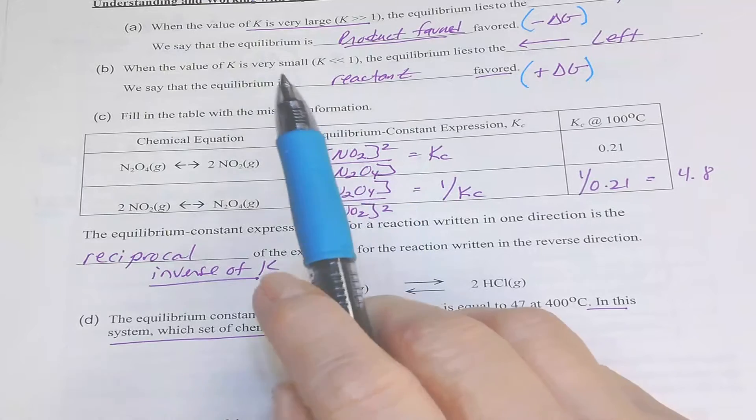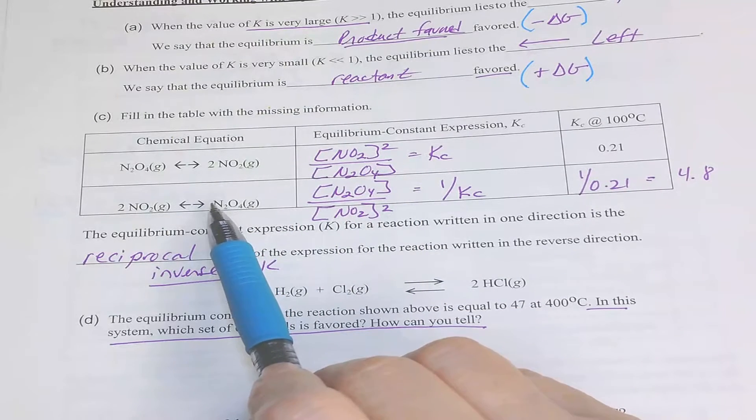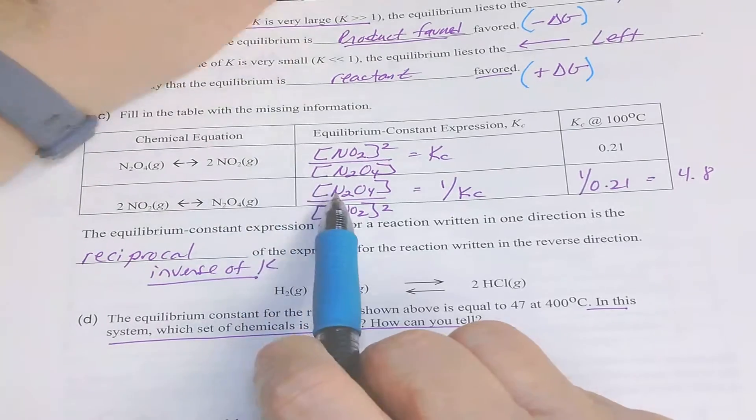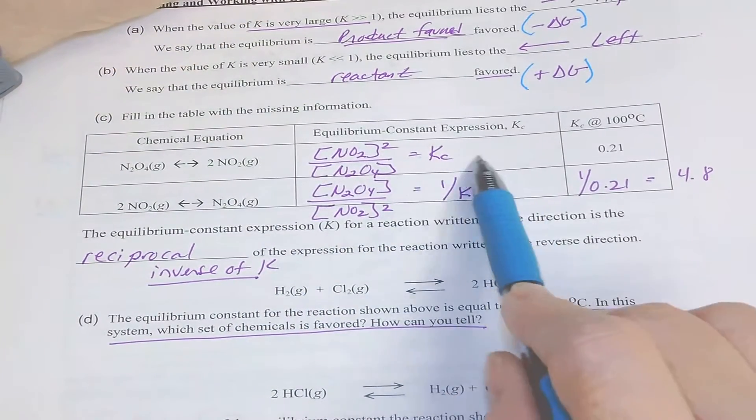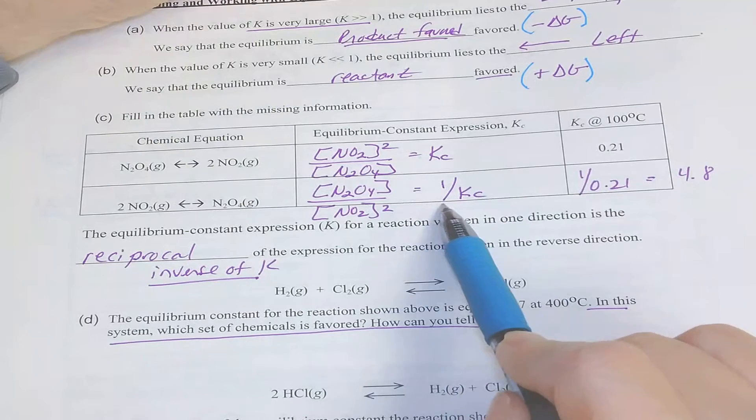The relationship is not the same as with Hess's law, where you would flip it and put a negative sign and double it. Here, when you flip it, it's the inverse of that.